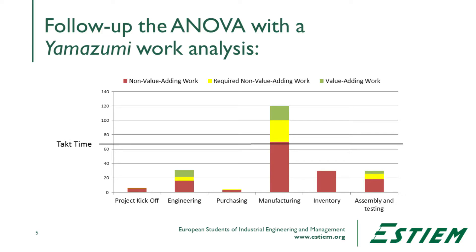To do this, we use what's called a Yamazumi diagram. Yamazumi literally means a stacked-up bar chart. We can create these in Excel — they don't actually create very well in Minitab. The Yamazumi chart shows us whether we have balance in the work. Looking at those process steps, we see that the manufacturing step has a lot of non-value-adding work in it.